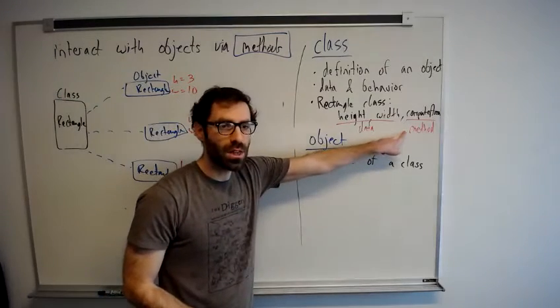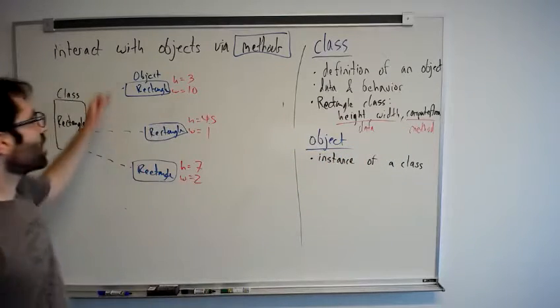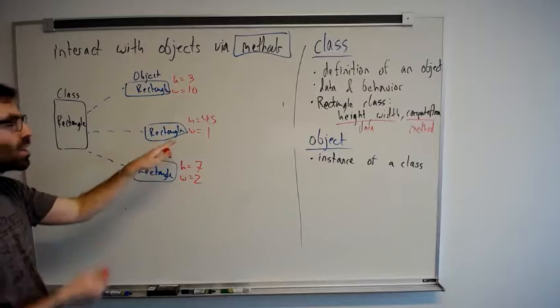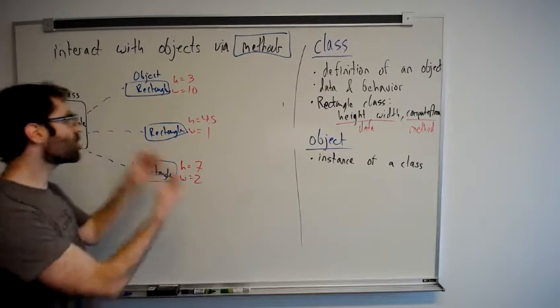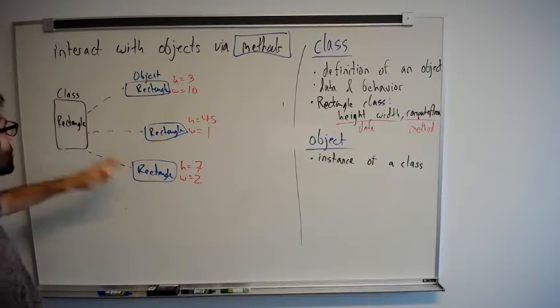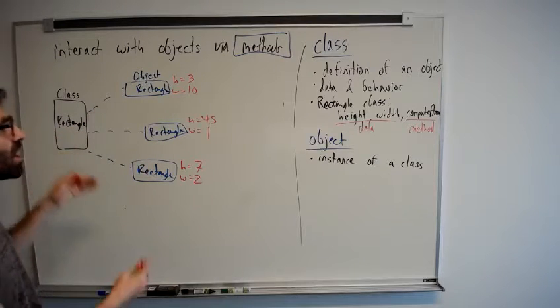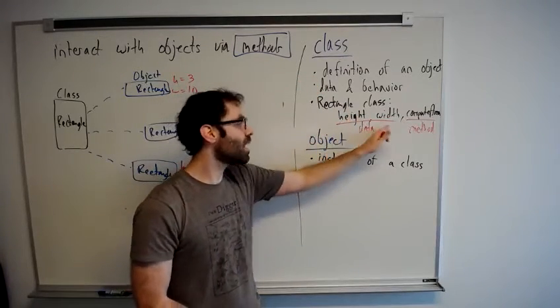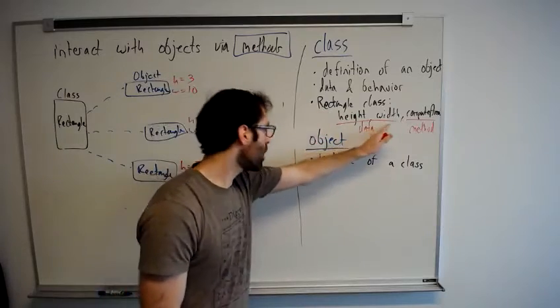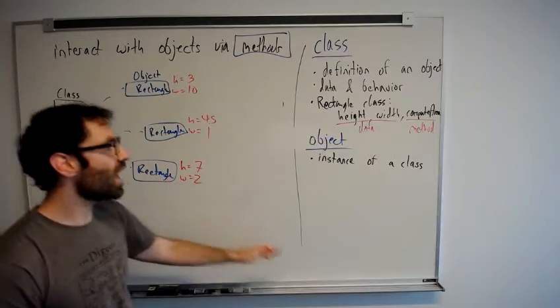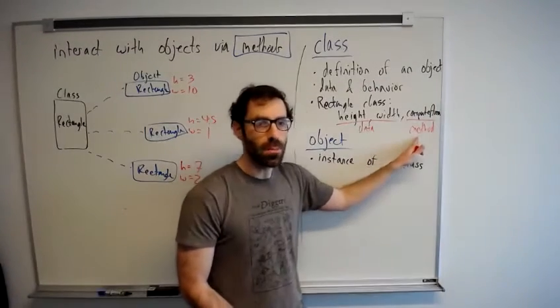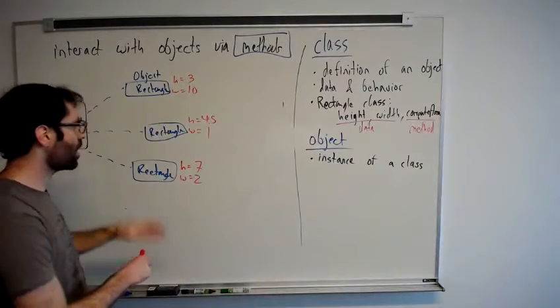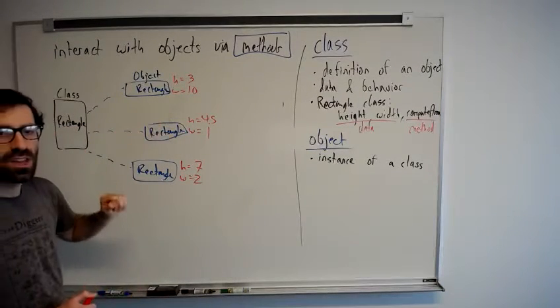But the formula for computing the area, this method, is the same for all of them. It just takes the data, just takes height and width for a particular rectangle, multiplies them together and that gives you the area. So these three instances of this class, they share a definition. They have the same types of data, they all have a height and a width, they just can be different for each instance. And they also share the methods defined in that class which use that data or modify the data for that particular instance in some way.